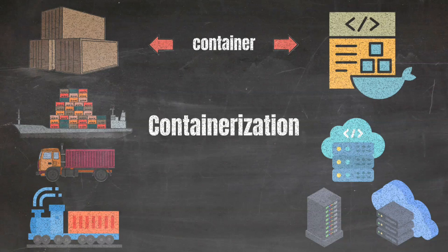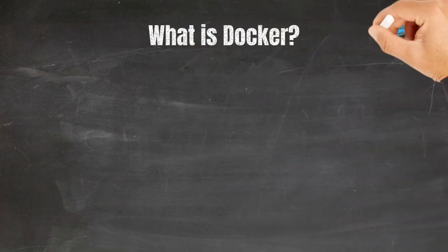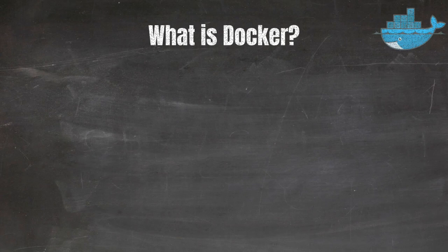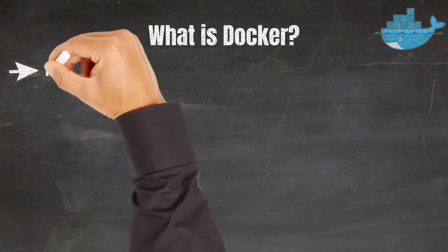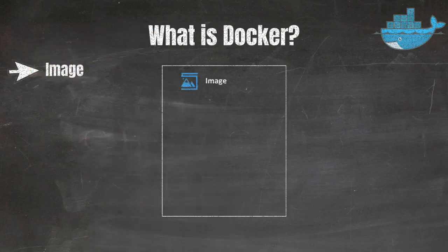This means you can develop on your local machine, test in a staging environment, and deploy to production, all with the confidence that your application will behave the same way in each environment. Docker has become synonymous with containerization — much like Kleenex for tissues. Docker is a platform that uses containerization technology to make it easier to create, deploy, and run applications. A key concept is the image: a lightweight, standalone, executable package that includes everything needed to run a piece of software, including the code, runtime, libraries, and system tools.